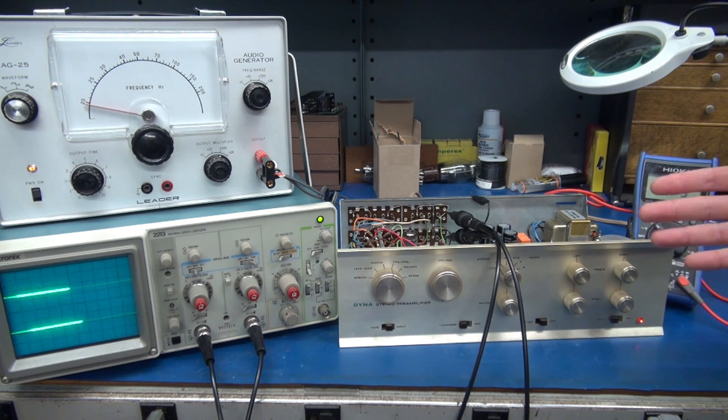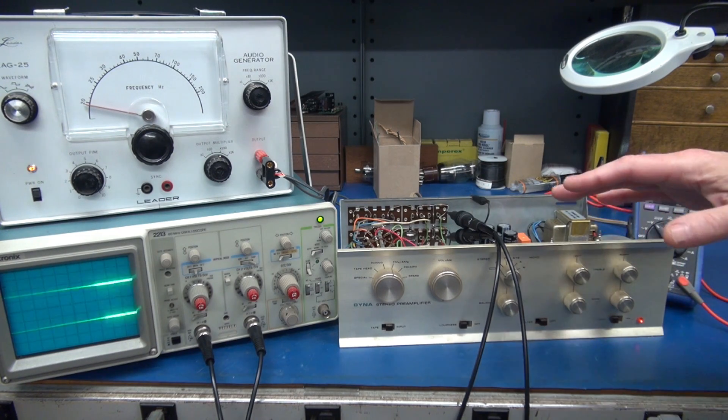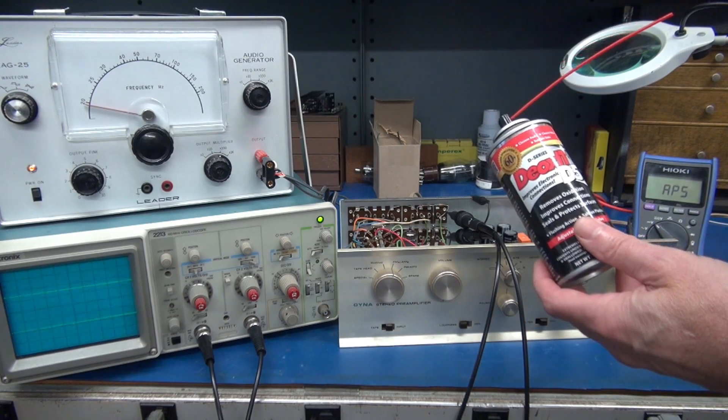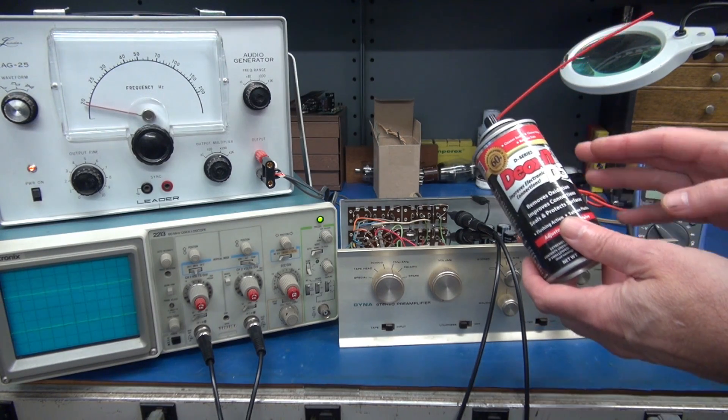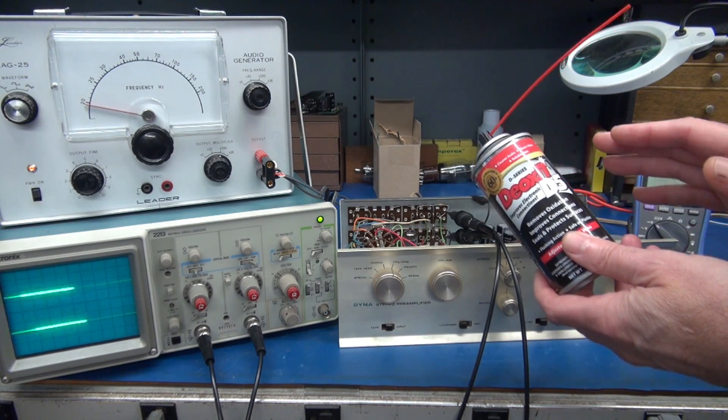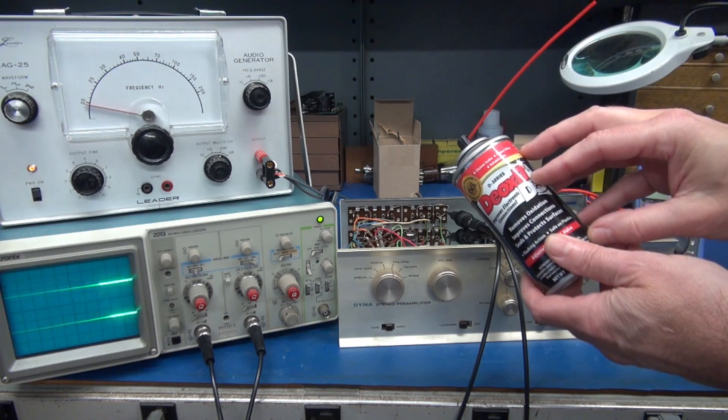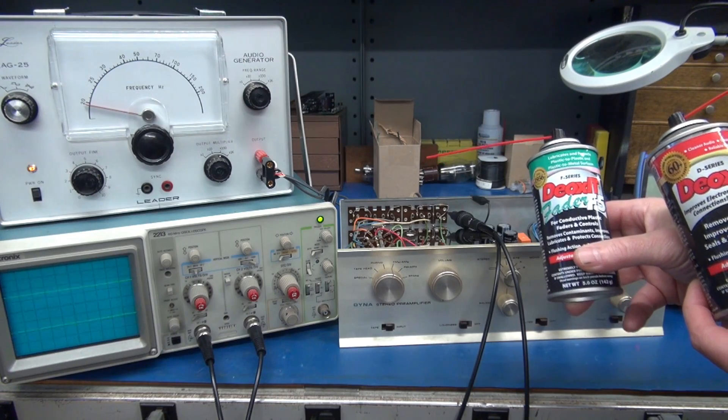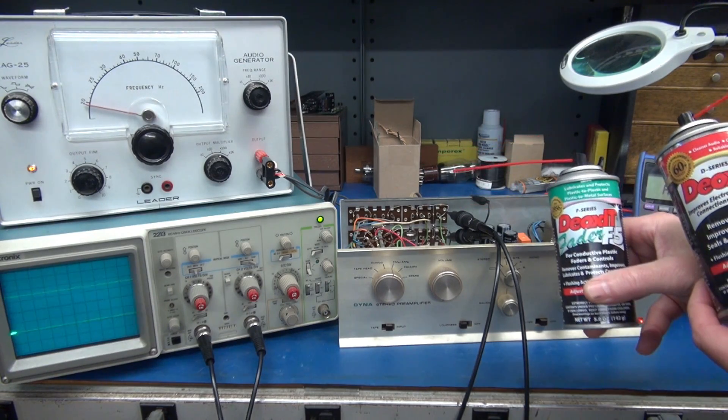As a recommendation, if you do notice noise in the controls or switches, you want to use Deoxit to correct those situations. The D5 is for switches, so these are for mechanical connections. And then the Deoxit Fader F5 would be for the potentiometers.